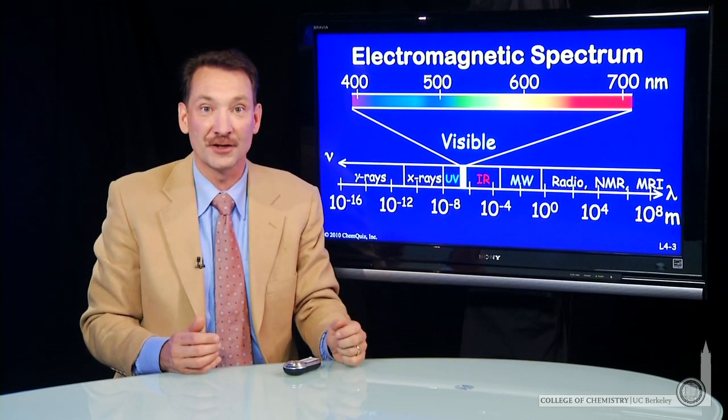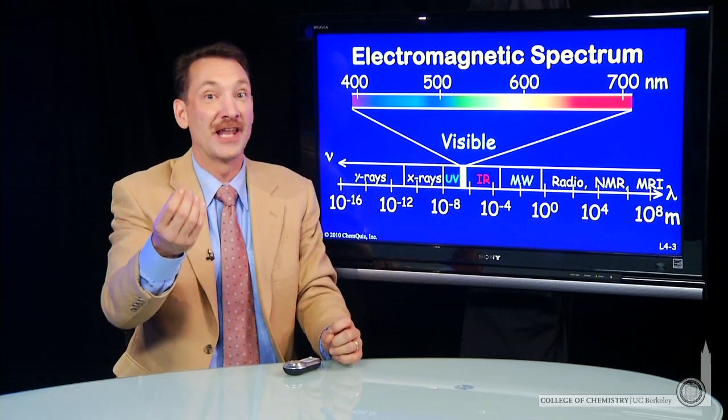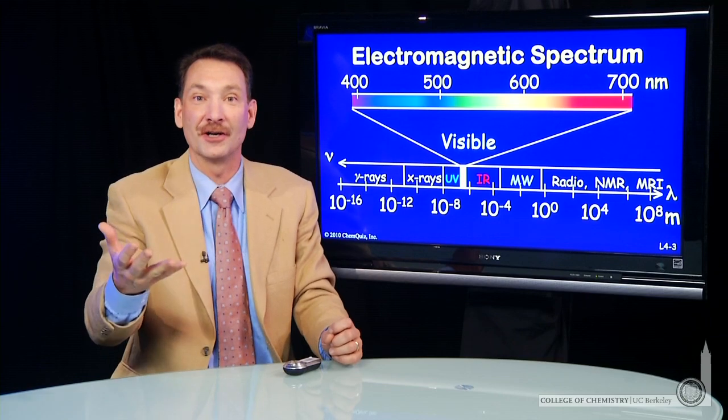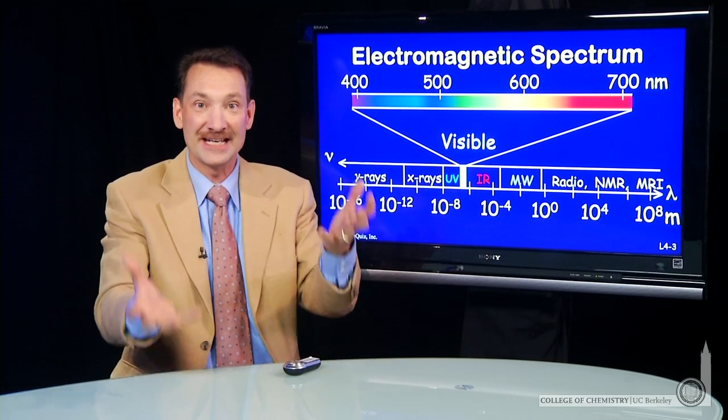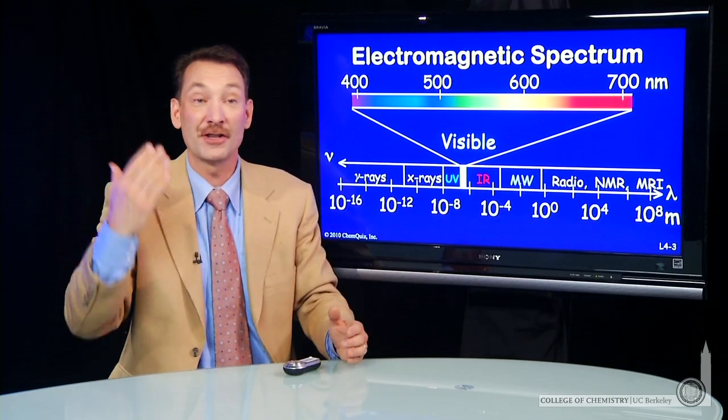The visible region, in particular, we're going to talk a lot about because we can perceive the length of the radiation by the color. So we can make that easy connection between a wave and its length by the color that we see.